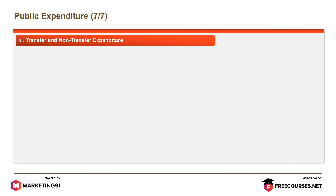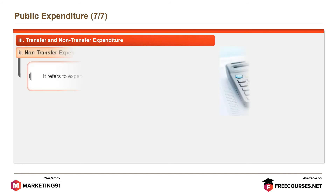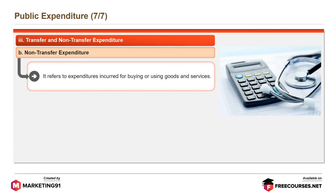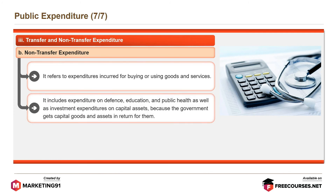Non-transfer expenditure refers to expenditures incurred for buying or using goods and services. It includes expenditure on defense, education, and public health, as well as investment expenditure on capital assets, because the government receives capital goods and assets in return for them.